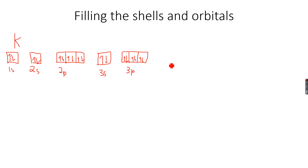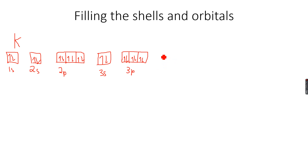After 3p comes 4s, because 4s has less energy than 3d, so 4s will always fill first and then 3d will fill. So after 3p comes 4s, and after 4s comes 3d. We write 4s here — we are only left with 1 electron, so there will be 1 electron in 4s.